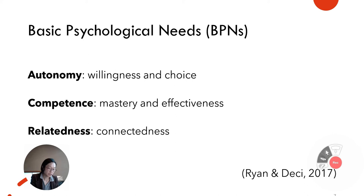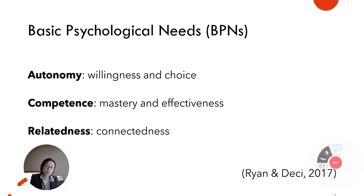Competence concerns the feeling of mastery and effectiveness. When this need is satisfied, one feels capable and experiences opportunities to use one's expertise. On the contrary, when the need for competence is not met, one may experience a feeling of helplessness. Relatedness relates to feeling connected to one's social environment. If this need is fulfilled, one feels bonded and cared for, but if it is frustrated, one may feel a sense of loneliness.